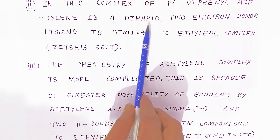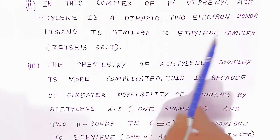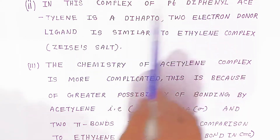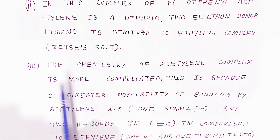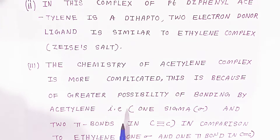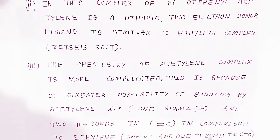In this complex, diphenyl acetylene acts as a dihapto, two-electron ligand, similar to the ethylene complex in Zeise's salt. The chemistry of acetylene complexes is more complicated because of the greater possibility of bonding by acetylene — one sigma bond and two pi bonds in a carbon-carbon triple bond — compared to ethylene which has one sigma bond and one pi bond in a carbon-carbon double bond.